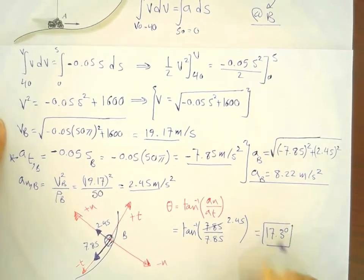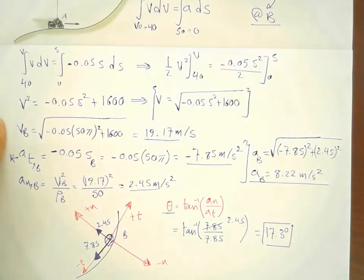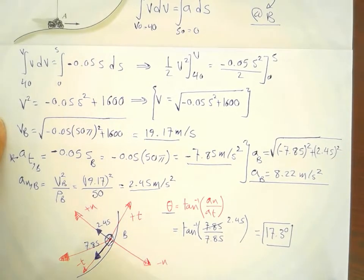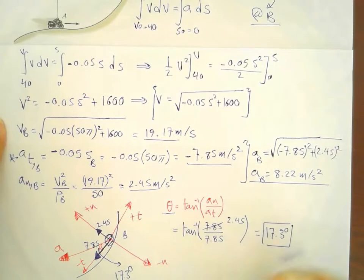So, the angle here is the angle between the overall acceleration and the tangential axis. So, we have here the overall acceleration, the magnitude of the acceleration. And this is the angle between the magnitude of the acceleration and the minus tangential axis, 17.3 degrees.